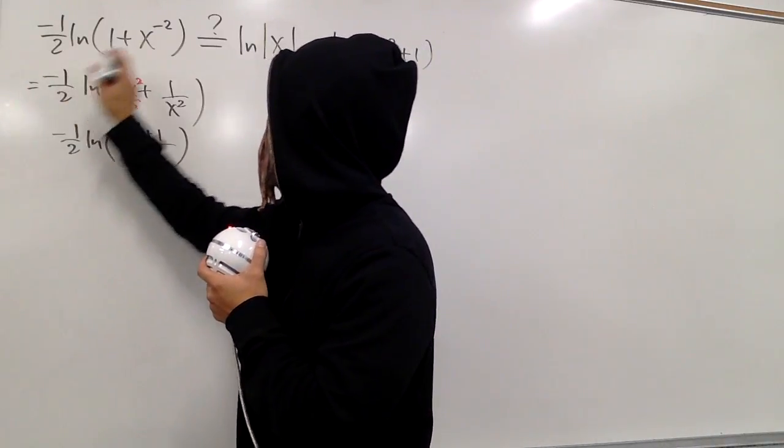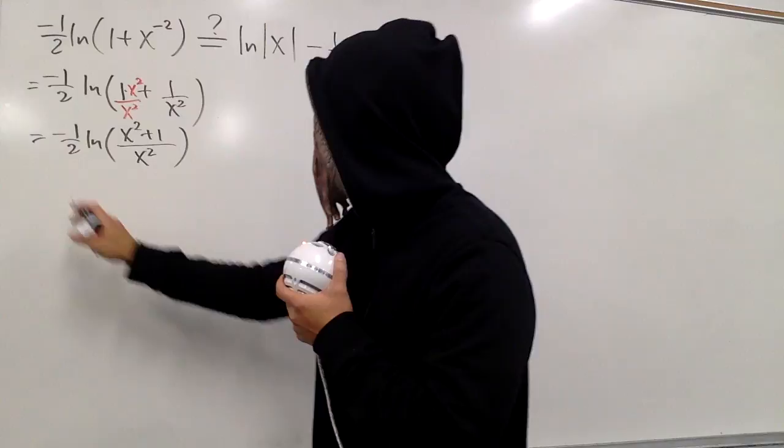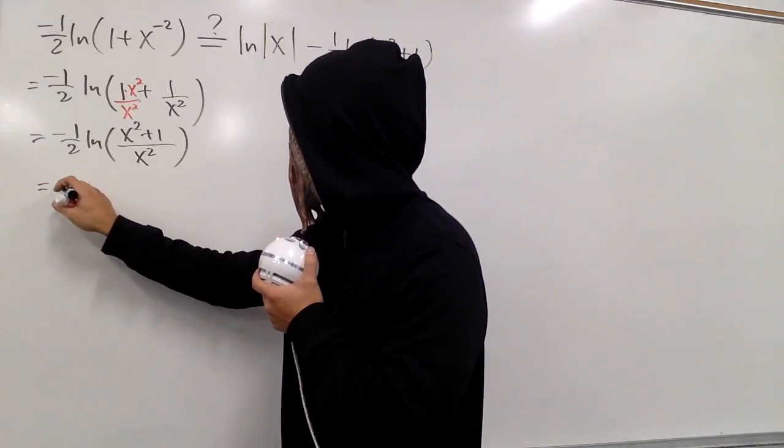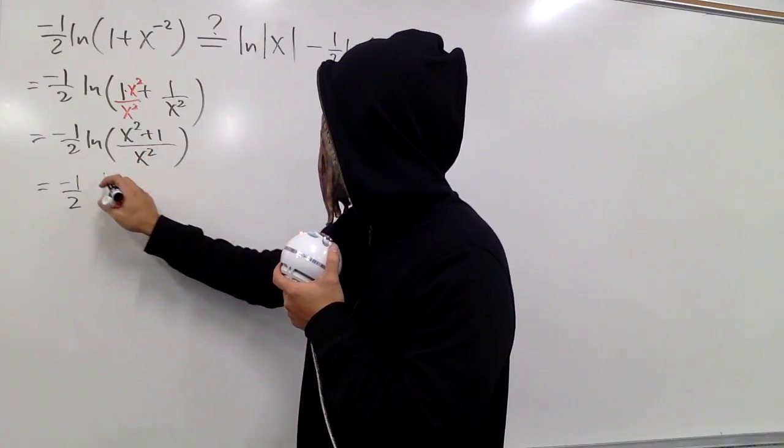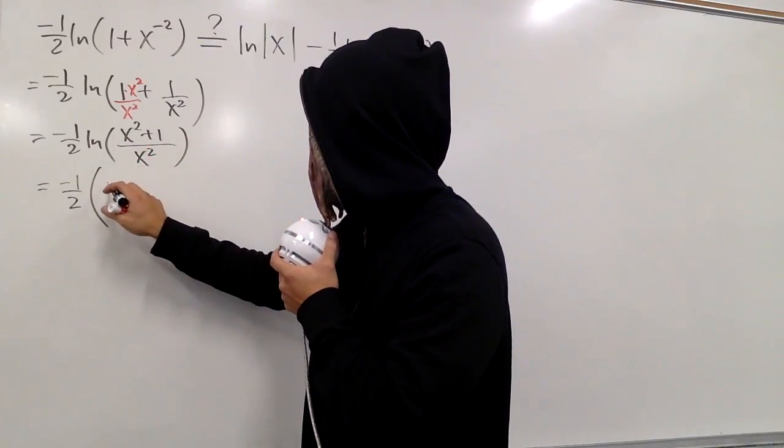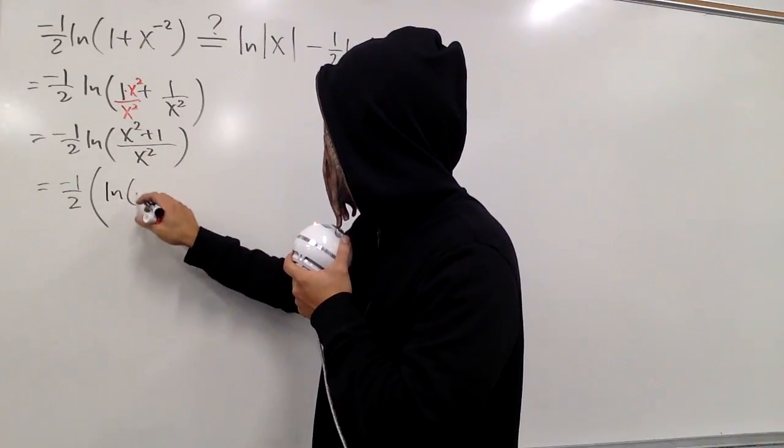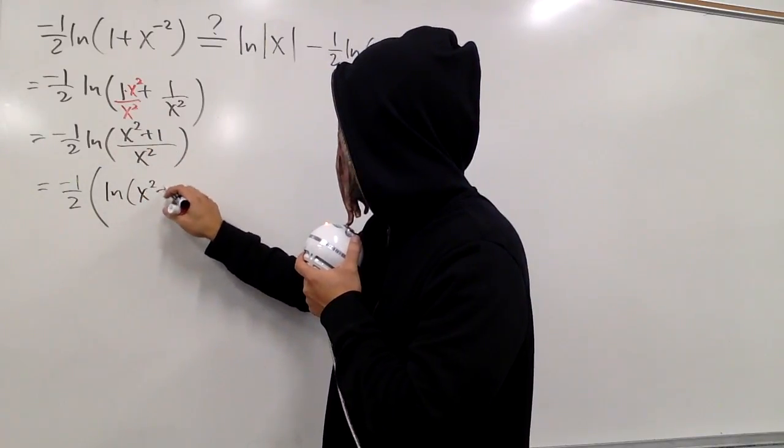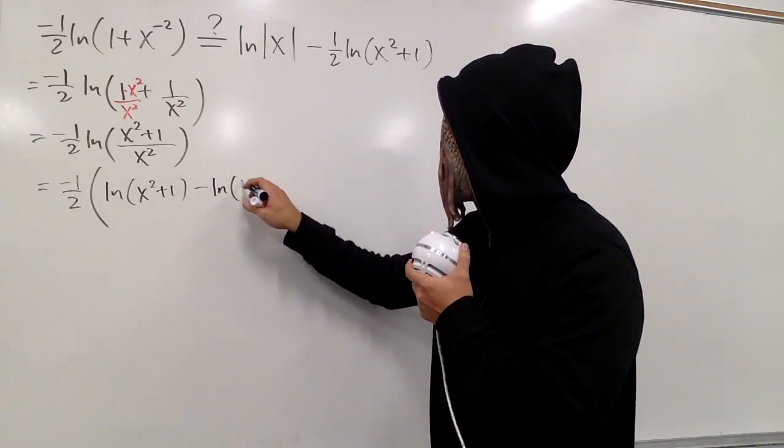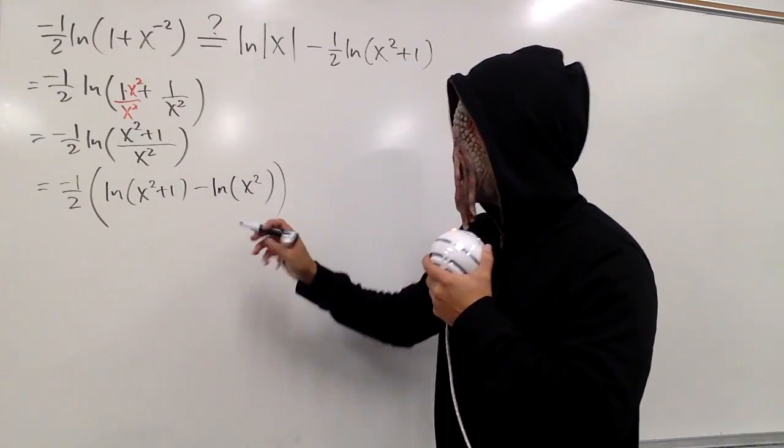So, I should put down equal sign. The left-hand side is equal to this, the left-hand side is equal to that, and then the left-hand side is equal to the following. I will put down the negative 1 half right here, and I will open the parentheses. Inside here, we will have the first natural log, and then we have the parentheses, x squared plus 1, and then minus the other natural log, and it's just x squared, like that.